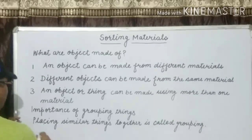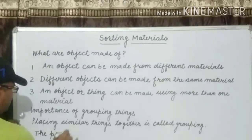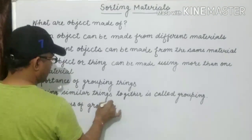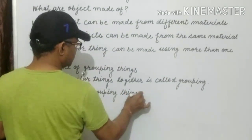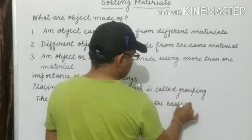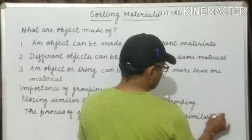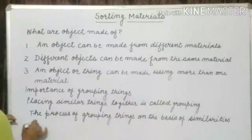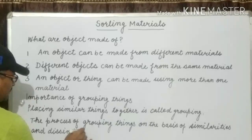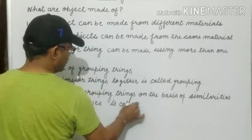Grouping is done based on the similarities between objects. And what is classification? The process of grouping things on the basis of similarities and dissimilarities is called classification.